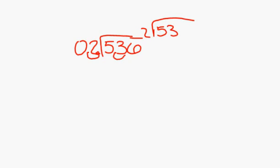Then you have to bring the decimal up right above the point in 53 and 6 tenths. Now you have to see if 2 goes into 5 — it goes into it twice, so you put the 2 in the answer place. Then you do 5 minus 4 and you get 1. Then bring down the 3.